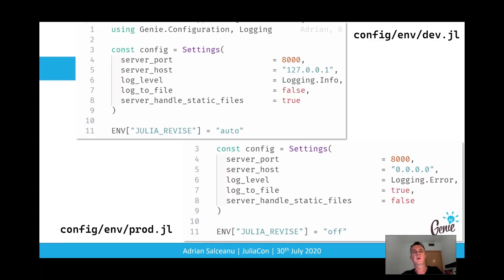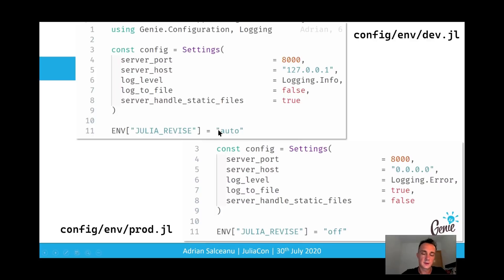To illustrate the best-practices-by-default philosophy in Genie, the development and production environment files are optimized for their respective needs. In development, logging is set to info, we do not log to file, we use the Genie web server to handle static files, and Revise is on. In production, we log only errors, log to files, disable static file handling by the server — which should be handled by a proxy such as Apache or Nginx — and we disable Revise.